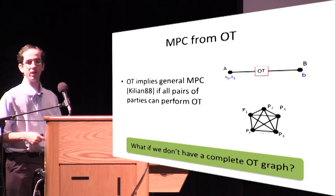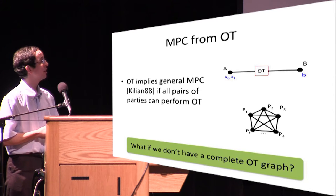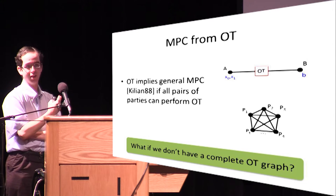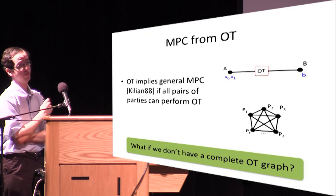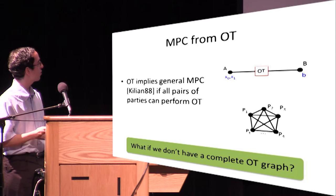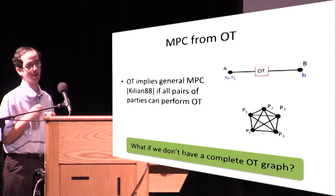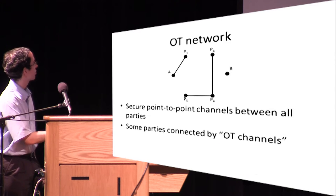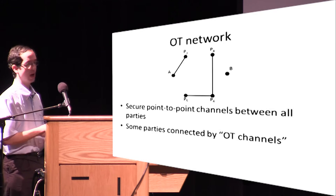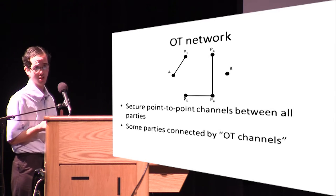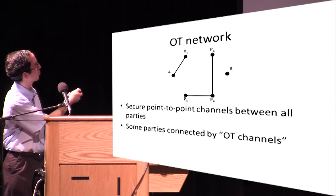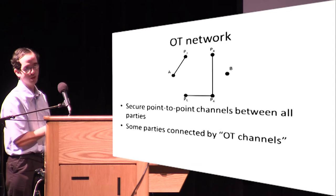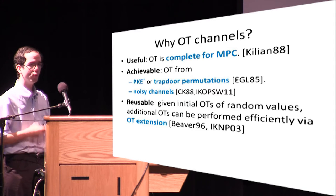The infrastructure we're interested in is based on oblivious transfer. Killian showed that if the parties in a network can perform oblivious transfer, then that's enough to securely compute any function, as long as every pair of parties in the network can compute oblivious transfer. The question we ask is: what if only some pairs of parties can compute oblivious transfer and others are not allowed to? Can we still get secure multi-party computation? In the model, we have n parties, and every pair of parties is connected by secure point-to-point channels, but some pairs have special oblivious transfer channels represented by edges.